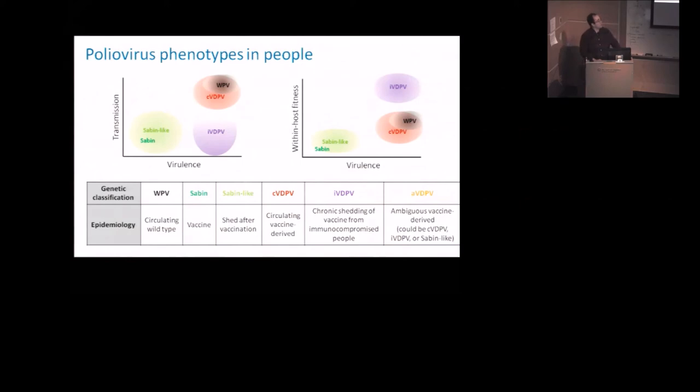And related potentially to that is that they're on this axis that within host fitness is potentially much, much higher. 30 years is an exception, but the average immunocompromised shedder that we know about sheds for more than a year before they spontaneously stop. And compare that to 30 days for a typical Sabin-like infection. And so these things within that unusual human host are substantially better at persisting in that human host and are plausibly, from the epidemiology, not as good at transmitting. And maybe the last thing that will come up on some of the figures is there's a set of things called ambiguous vaccine-derived polioviruses. That's an epidemiological category which says we found a virus. It has genetic features of it's not Sabin-like anymore, but we can't really tell what it is.